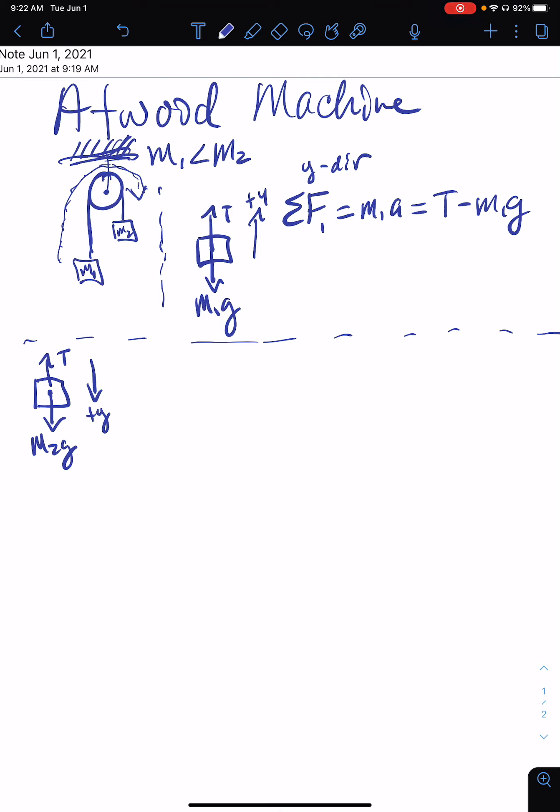That means that this system is moving as a unit. So whatever the acceleration is for m1—let me draw my arrow a little better—whatever the acceleration is for m1, same acceleration for m2. So they're accelerating the same way, but it's an unbalanced pair of forces, which is why m1 is moving up and m2 is moving down.